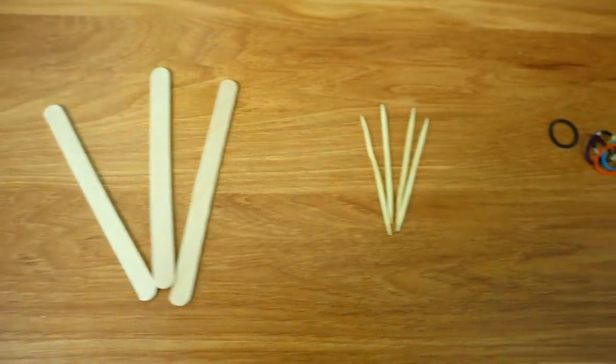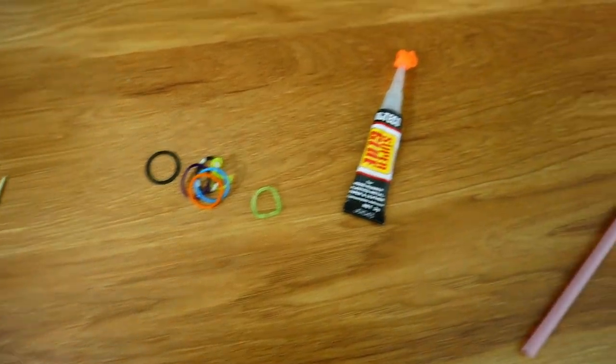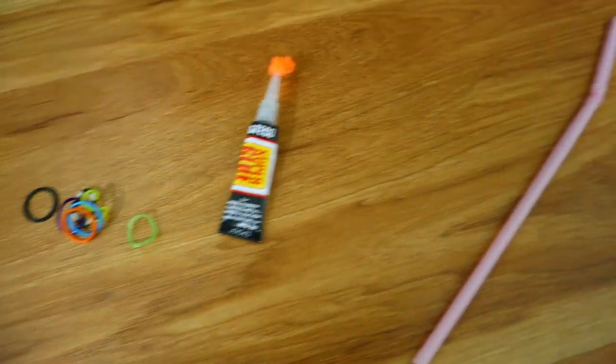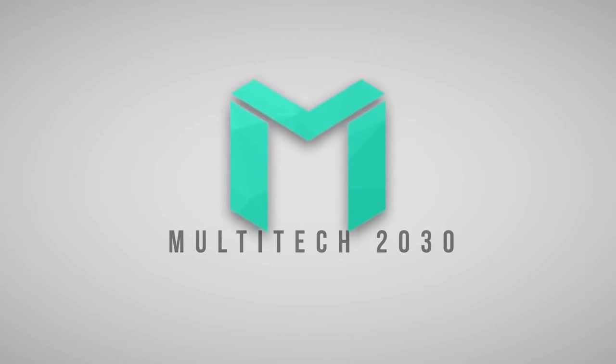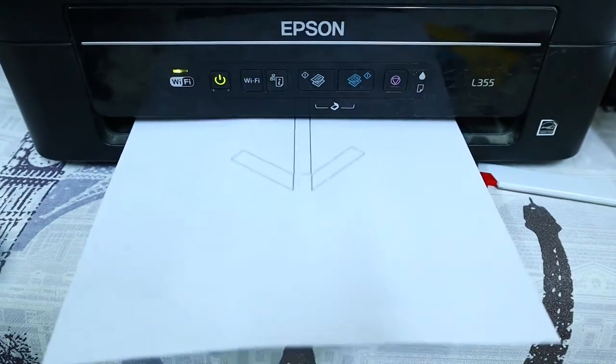You'll need some toothpicks, some rubber bands, super glue, and a straw. So let's get started. First, let's print the templates.